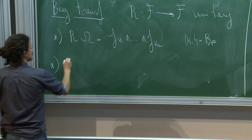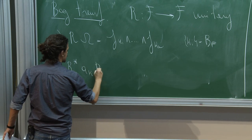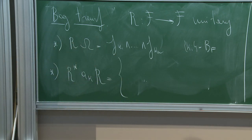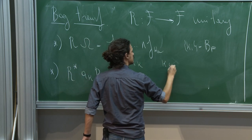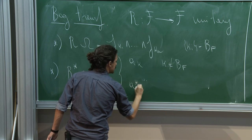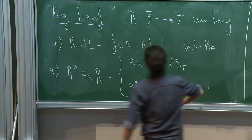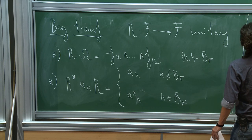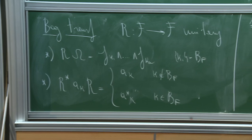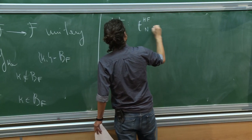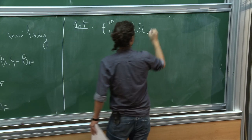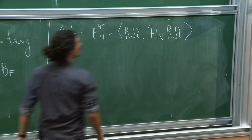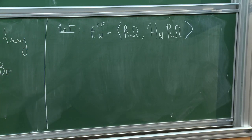The transformation R also implements a particle-hole transformation: conjugating a_k with R gives a_k if k does not belong to the Fermi ball, or a*_k if k belongs to the Fermi ball. As a consequence, the Hartree-Fock energy equals the vacuum expectation value of R^* H R, and using unitarity of R one can rewrite any state's energy in terms of the correlation Hamiltonian.